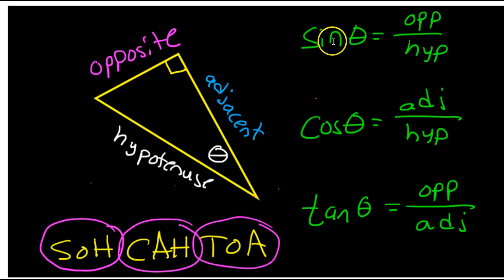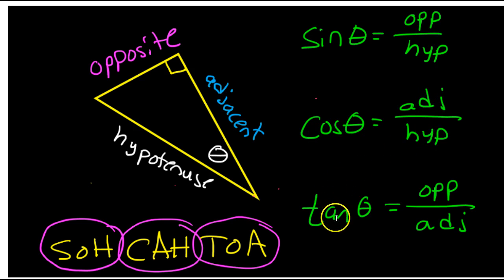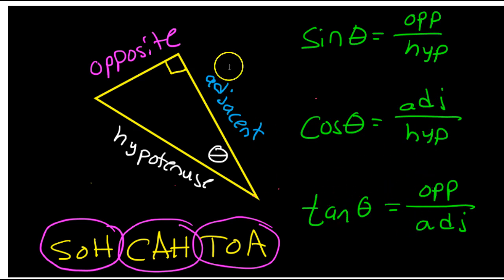When I say sine of theta is opposite over hypotenuse, cosine theta is equal to adjacent over hypotenuse, and tangent theta is equal to opposite over adjacent, I'm picturing this in my mind.